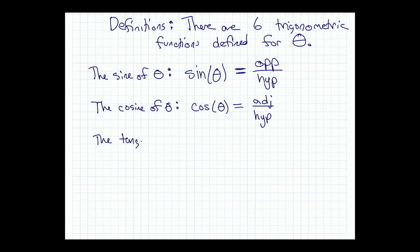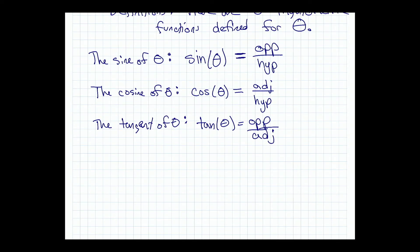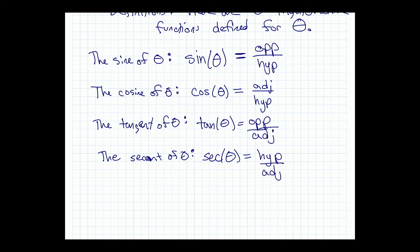The tangent of theta — written tan(θ) — is the opposite side over the adjacent side. Then there are three more which are basically just the first three flipped upside down. The secant of theta — written sec(θ) — is the upside-down cosine, so it's the hypotenuse over the adjacent side. If you've already calculated cosine, you can also get secant that way.